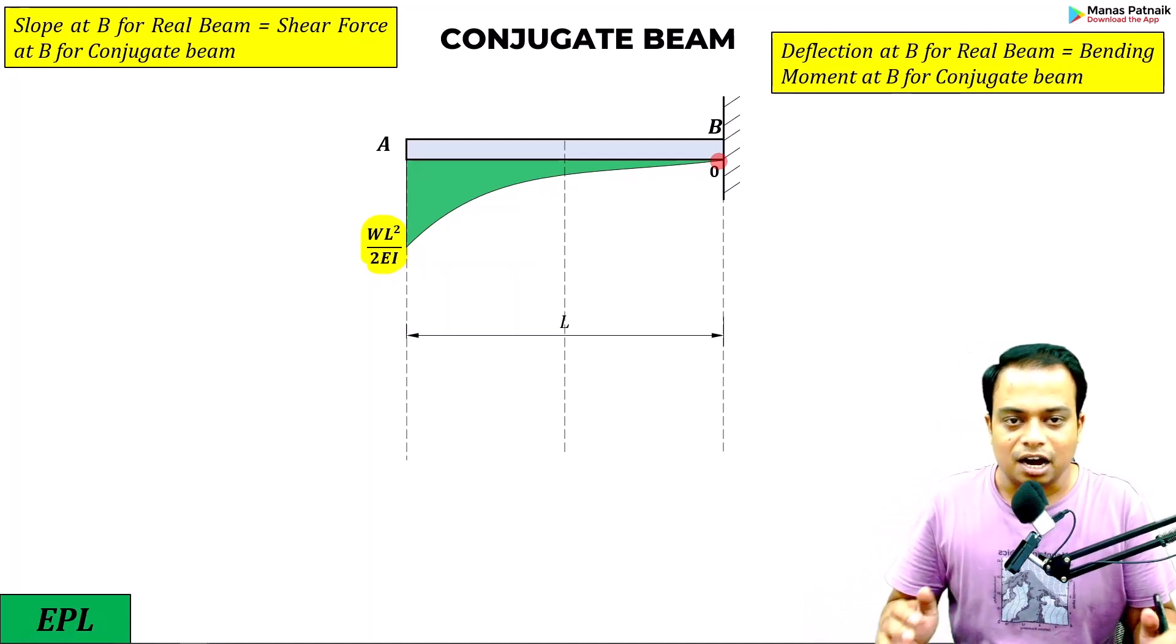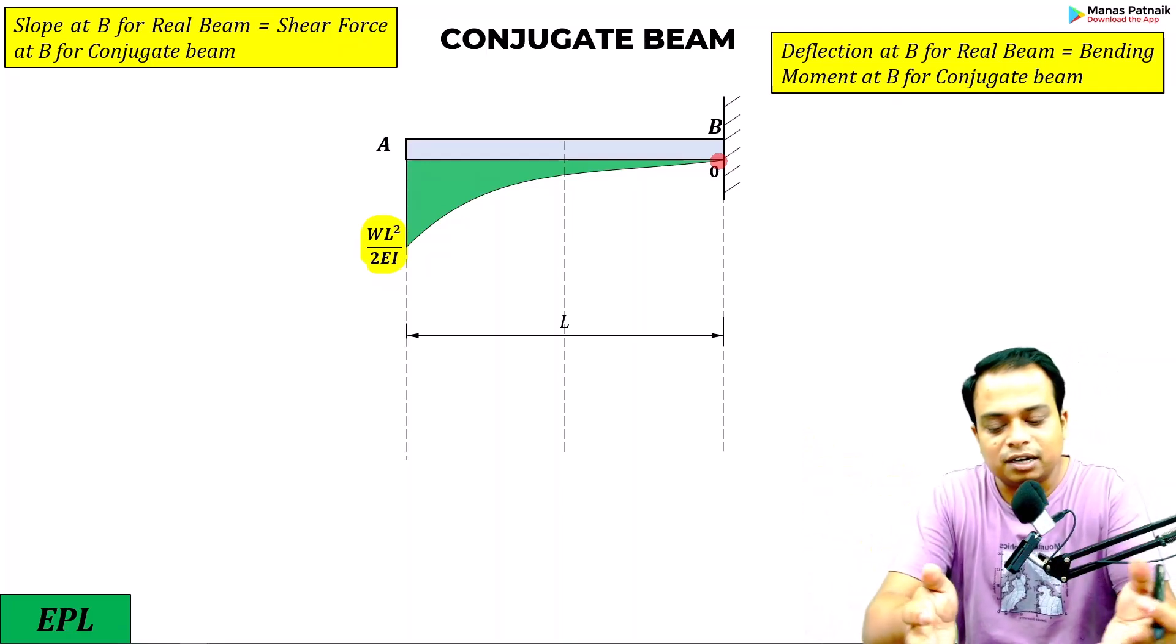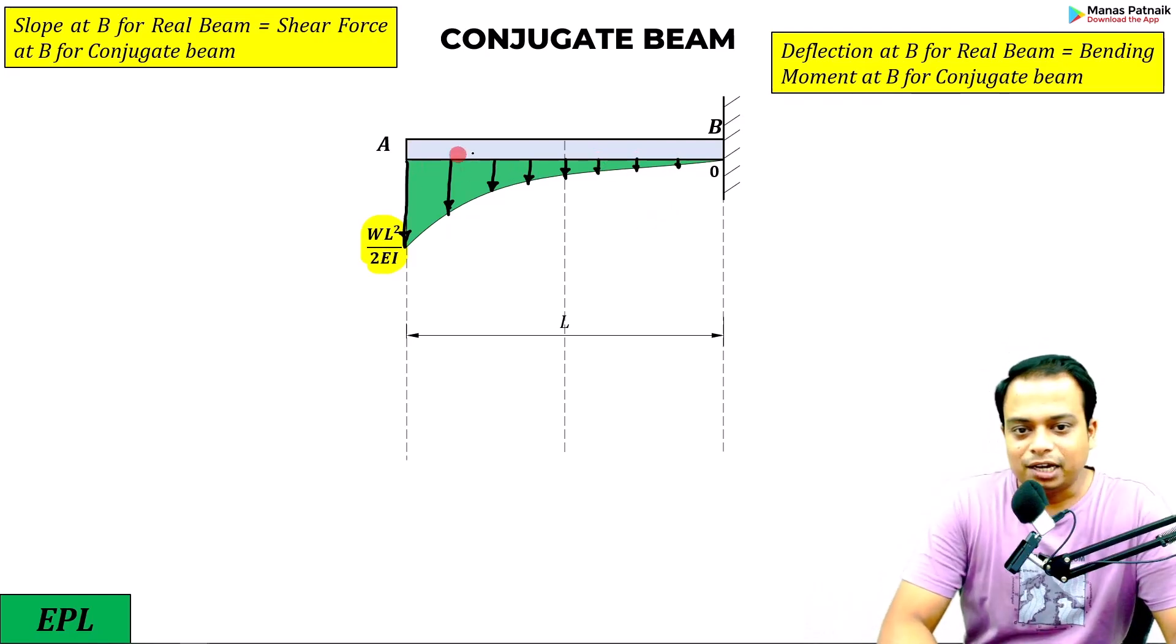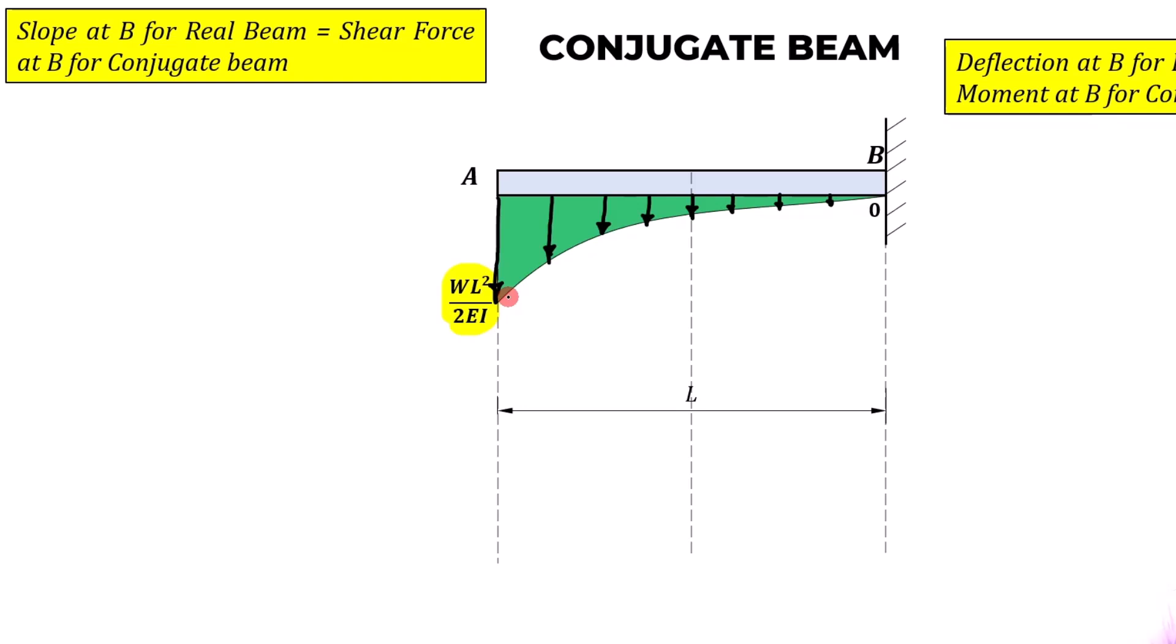You know the area: for parabolic spandrel it is one third. Can we convert this parabolically varying load into an equivalent point load? Yes, that can be done. It is acting right here at what distance. Please remember, this is L by 4 from the right angle corner. From here it is L by 4, it is going to be 3L by 4 from over here.